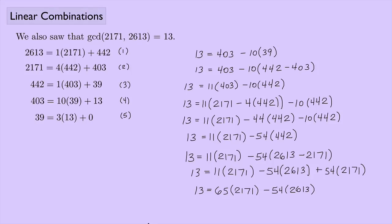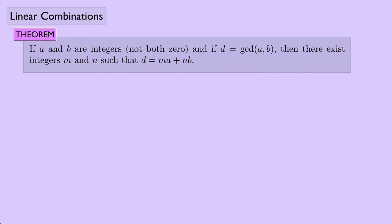This turns out to be very useful in abstract algebra, and it's something you can always do. The theorem states: if a and b are integers, not both zero, and d is the greatest common divisor of a and b, then there exist integers m and n such that d equals m times a plus n times b.